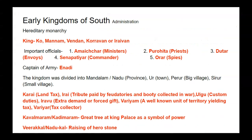The kingdom was divided into Mandalam or Nadu. The towns were known as Gur, and big villages were known as Perun while small villages were known as Sirur. Karai was the land tax imposed at the time of Sangam. Irai was tribute paid by feudatories and booty collected in war. Ulgu was custom duty. Iravu was extra demand or forced gift. Varyam was a unit of territory yielding tax, and Varyar was the tax collector.